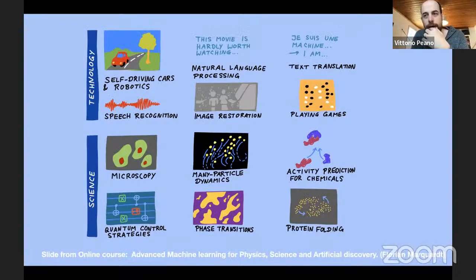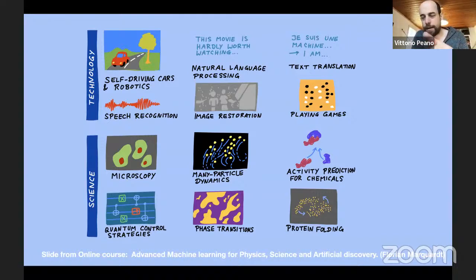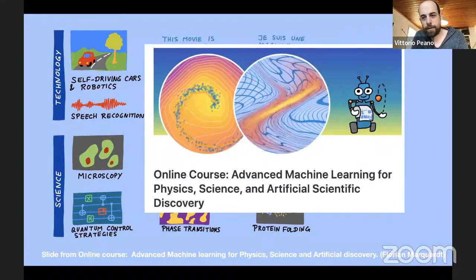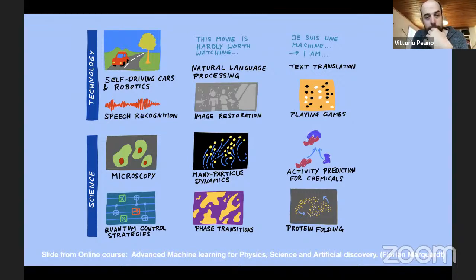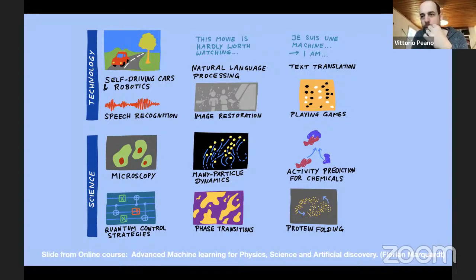Nowadays, neural networks combined with other machine learning techniques are used for a very wide range of tasks in both technology and science. In science, for example, machine learning can be used in microscopy — taking a low-resolution image and predicting a high-resolution version — or to accelerate the dynamics of many-particle systems.